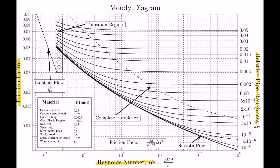On the scale: 10 cubed is the same as 1,000; 10 to the 4 is the same as 10,000; 10 to the 5 is 100,000; 10 to the 6 is 1,000,000; 10 to the 7 is 10,000,000, and so on. So we can use our Moody diagram when we have very high values for Reynolds number.